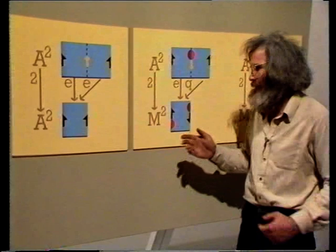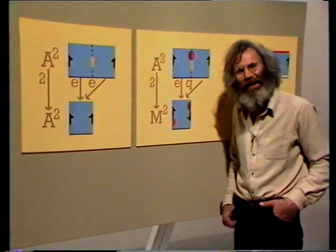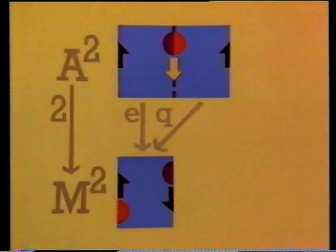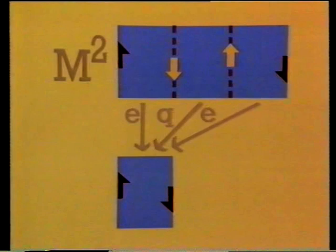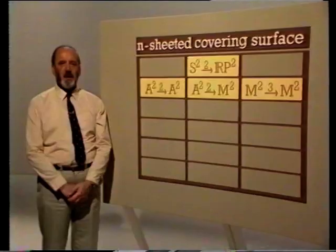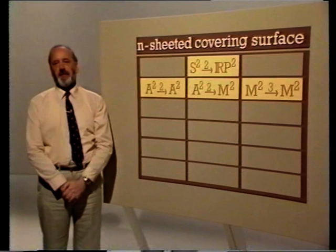In both examples, it's informative to look at what we've done in reverse — starting with the base surface. What's really happened is that we've cut along an edge and taken two copies, then glued appropriately to get the cover. Using this idea of taking copies of the base, we can get new examples. Consider the second example and take a third copy of the base; we use the identity map again, and the identifications on the covering surface mean that it's a Möbius band. So we've got a Möbius band as a threefold cover of itself.